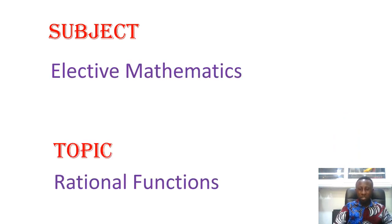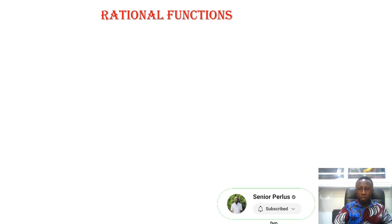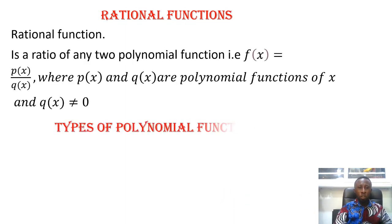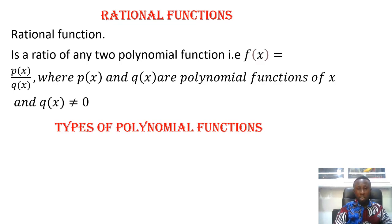Welcome to Senior Powers. Our topic for today is rational functions. A rational function is a ratio of any two polynomial functions — that's P(s) and Q(s) — where P(s) and Q(s) are polynomial functions of s, and Q(s) can never be zero.